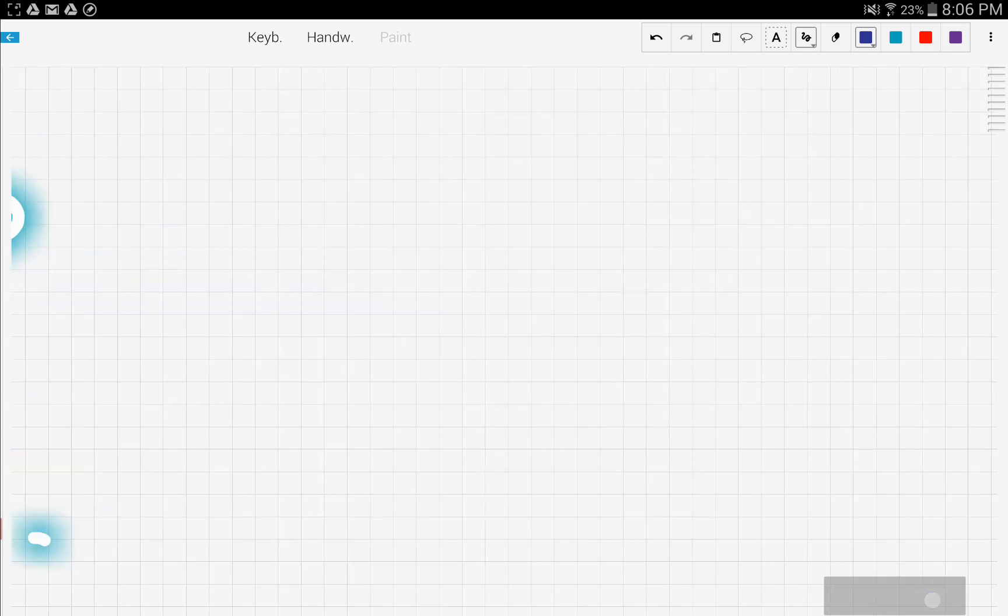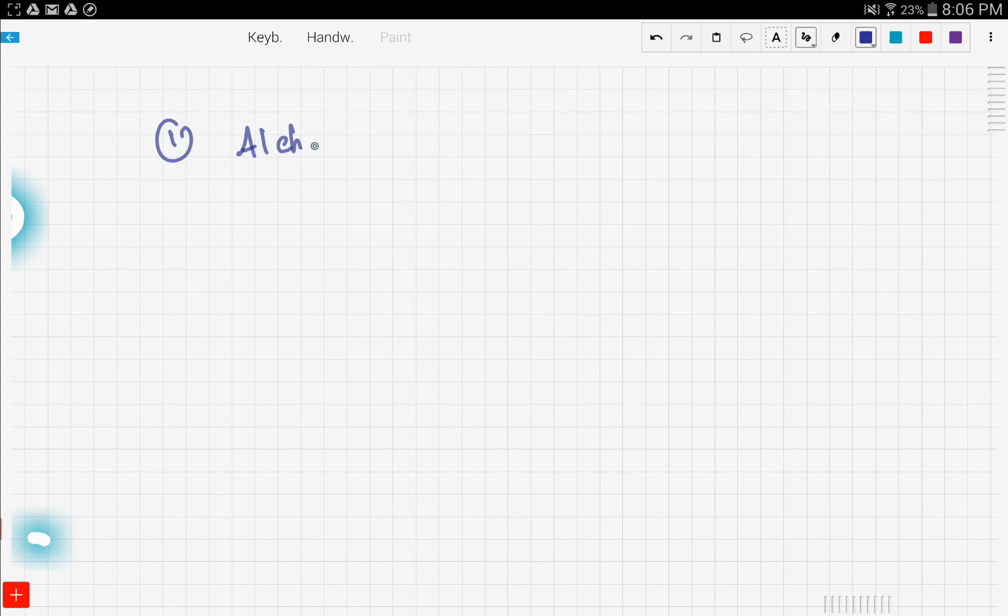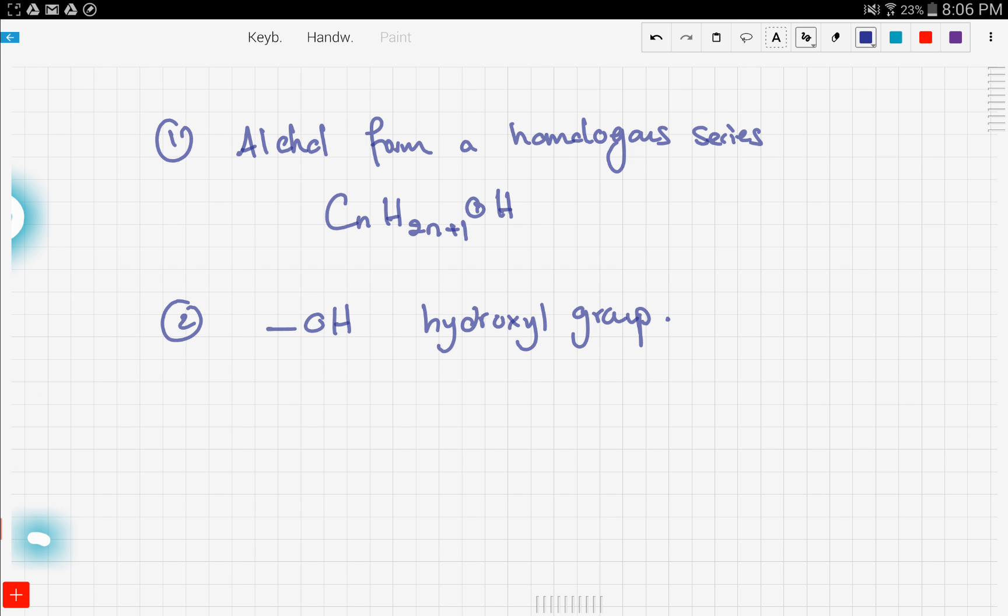So alcohols form a homologous series, and this series is noted by this formula: CNH2N+1OH. Now the alcohols are famous for their OH bond or the hydroxyl group. They are also famous for their suffix -ol, like methanol and ethanol and so on.